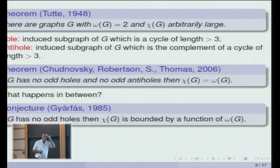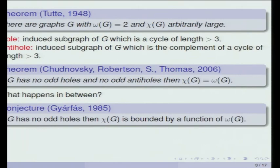It's a conjecture of Gyárfás that if you don't have any odd holes and the clique number is bounded, then the chromatic number is also bounded. There were actually several conjectures of this form, mostly by Gyárfás. If you have a graph with bounded clique number and huge chromatic number, then it must contain some specific induced subgraph — for any tree, that tree is an induced subgraph — and there's a conjecture it must contain a hole of length at least n as an induced subgraph.